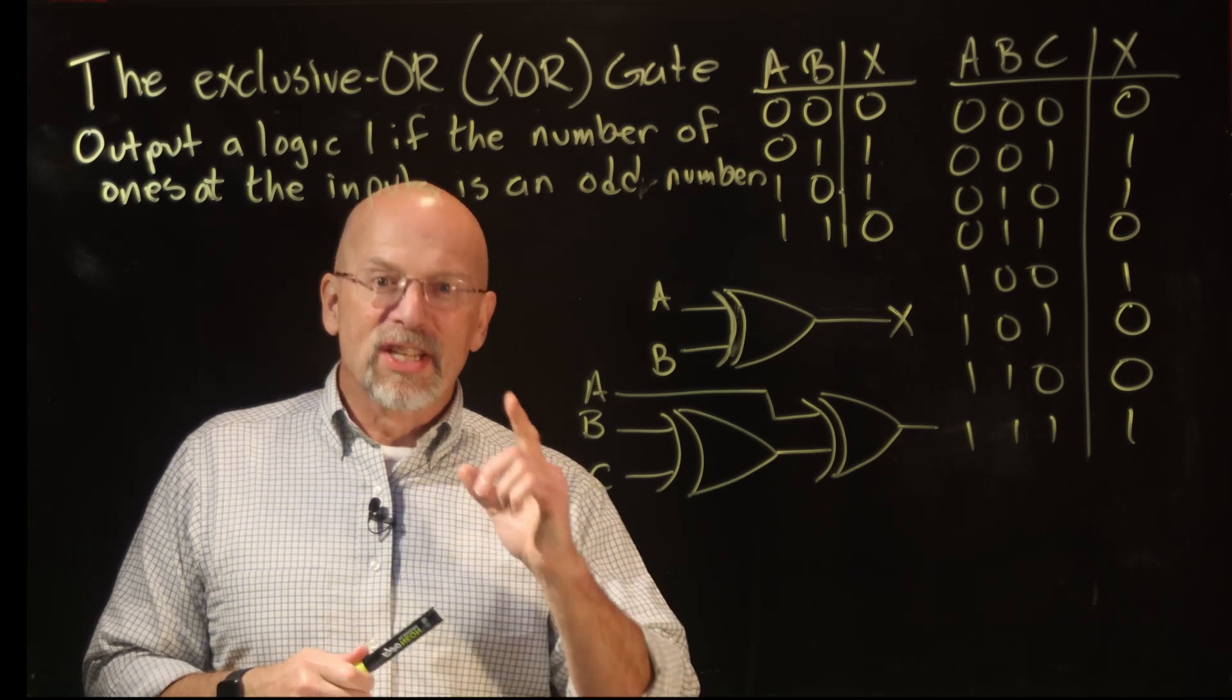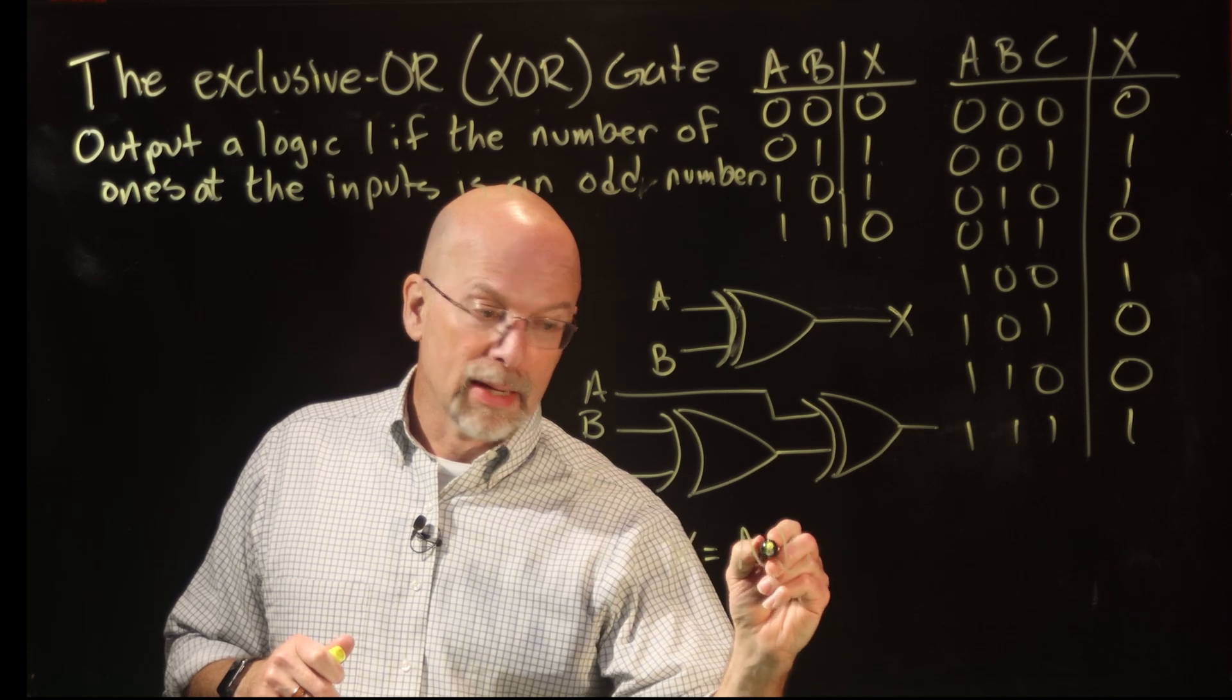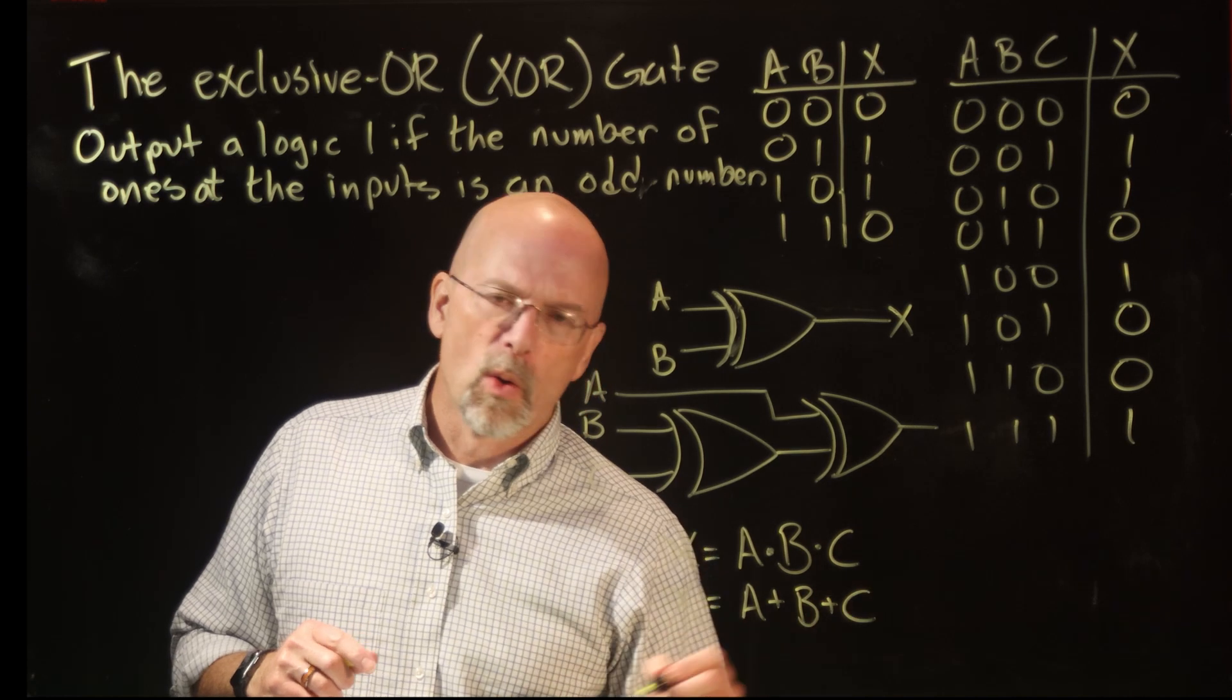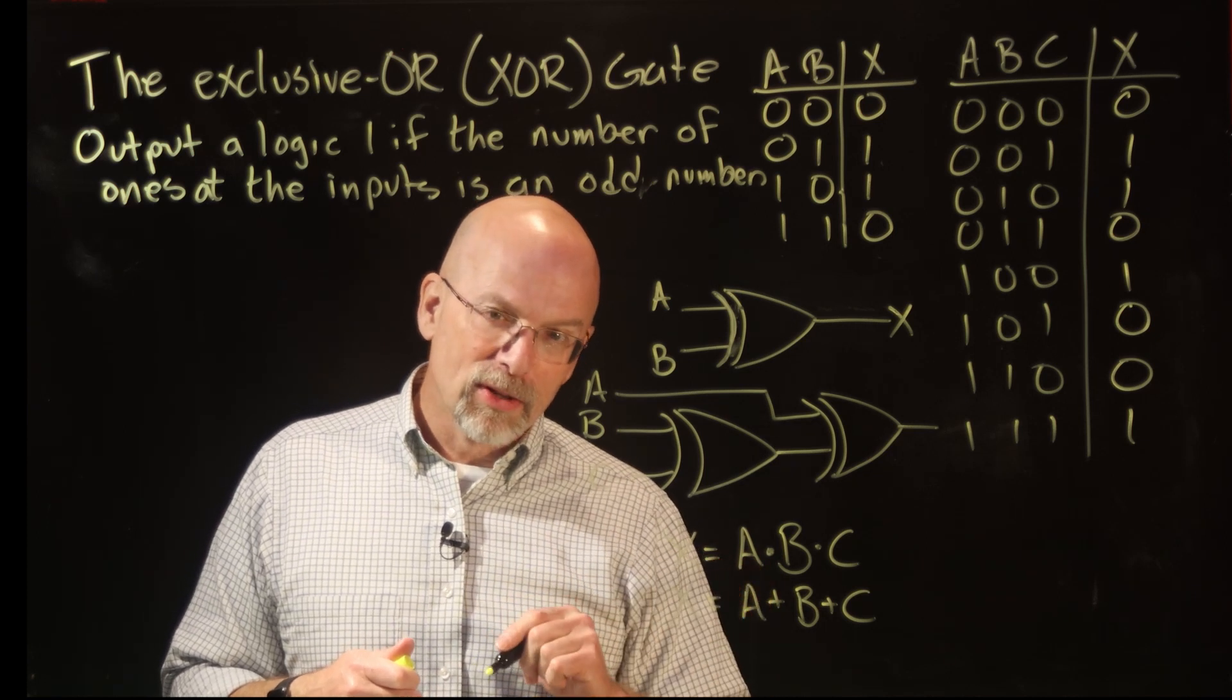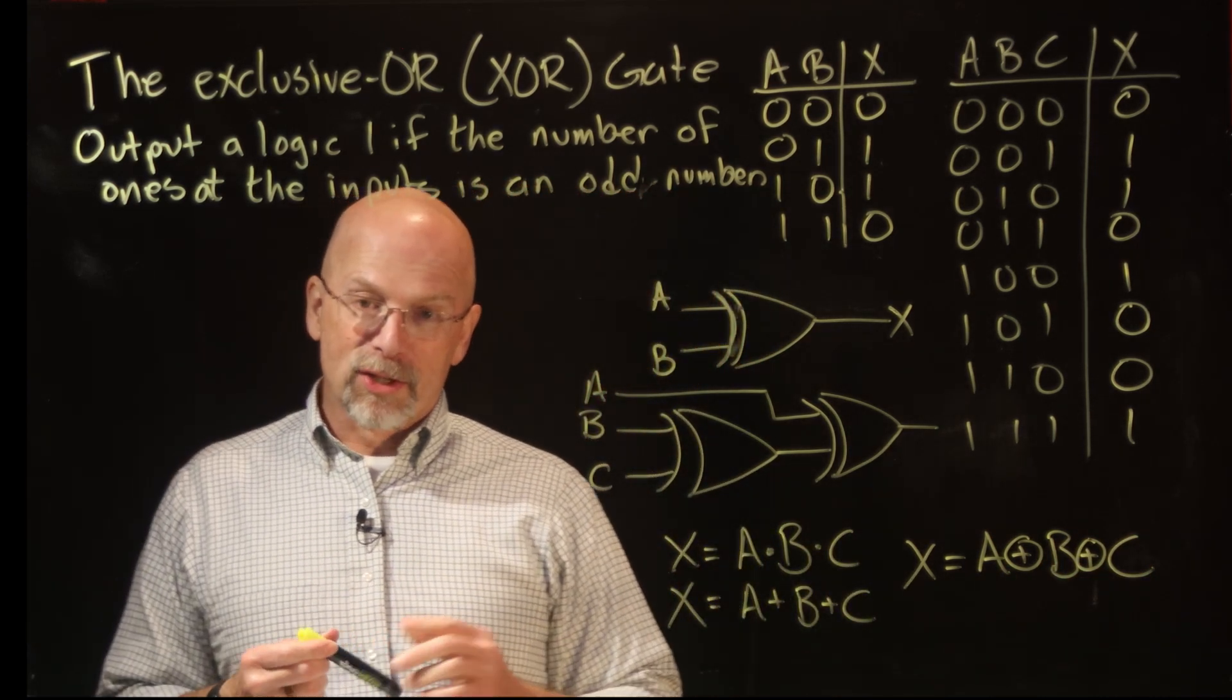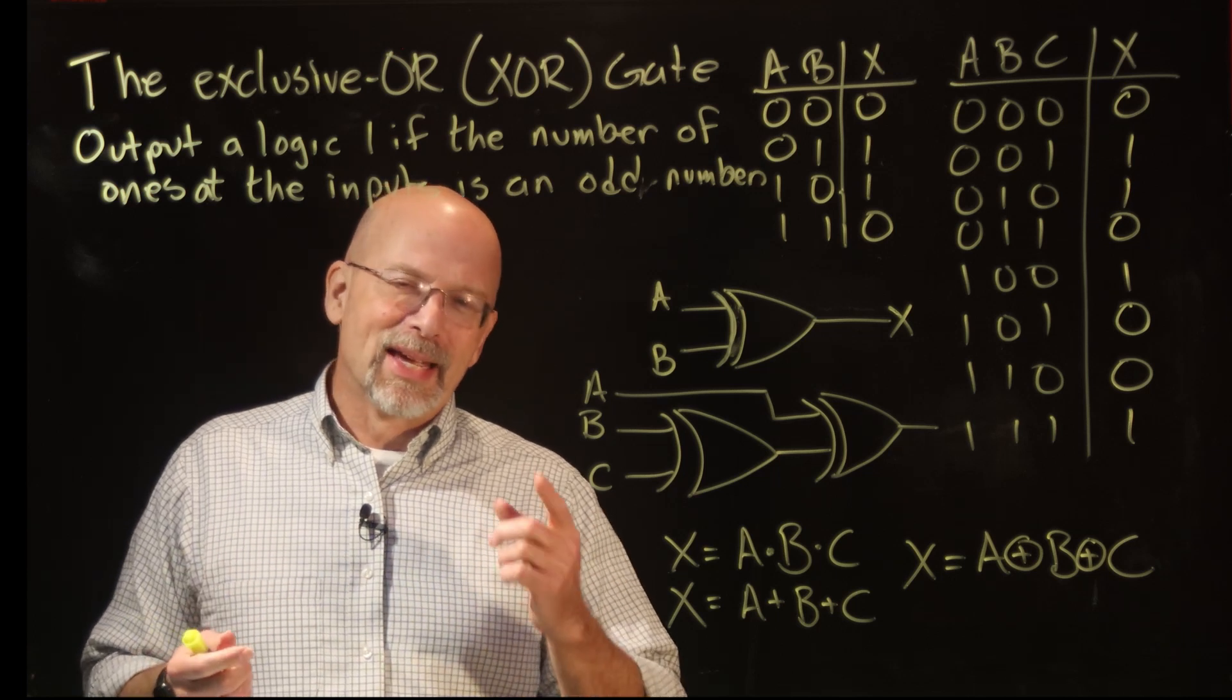Now for the last piece, the symbol that we use to represent the exclusive-OR. We did, remember, for the AND, we did the dot. We had A·B, right? Or A·B·C. For the OR, we did A+B. The summation represents the OR. For the exclusive-OR, it's very similar to the OR, except what we do is we put a circle around the plus sign to give us the symbol for the exclusive-OR. Now in the next lesson, what we're going to do is put all these pieces together in order to combine them into combinational logic.